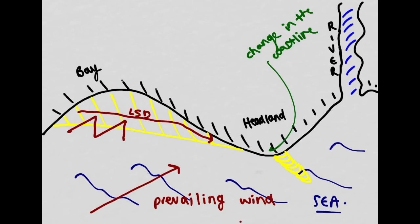Although our prevailing wind comes from one direction in general, wind doesn't always come from one direction. We might have a secondary wind — our second most common wind direction — coming from a different direction. If we have sediment building up and a secondary wind from this direction, our spit might start to turn a little bit and we can start to develop what we call a hook on the spit, which curves the end of the spit.